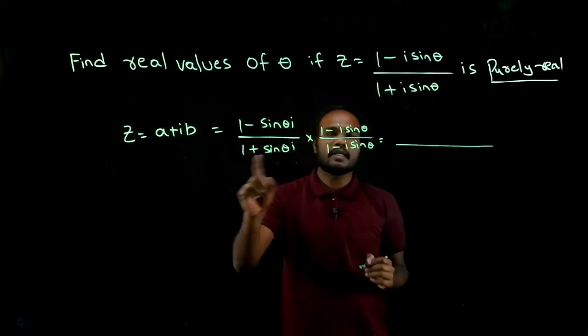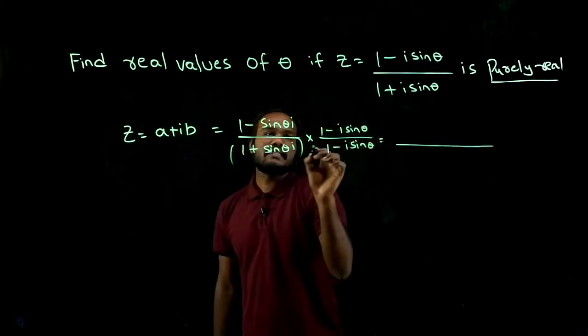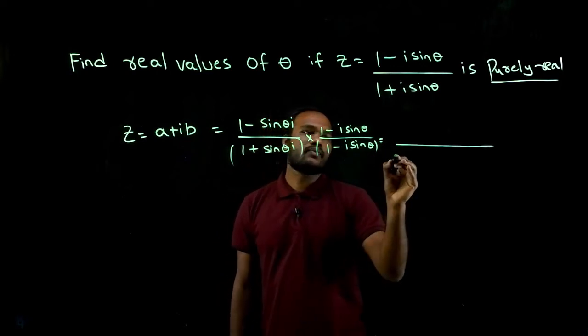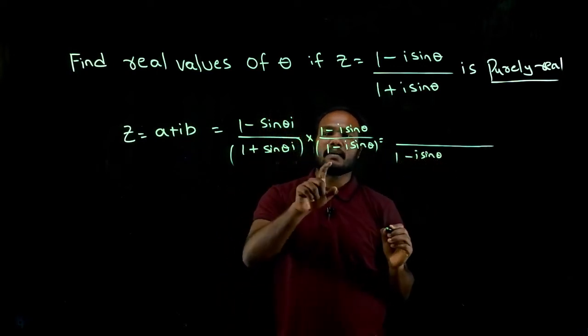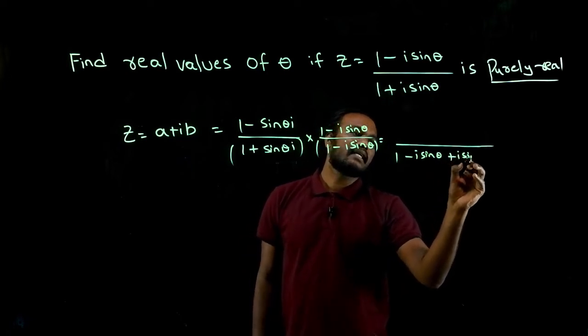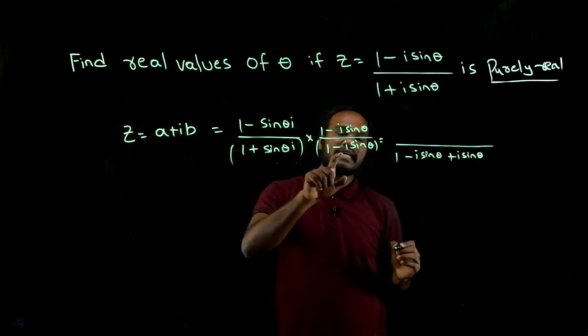What we'll have in the denominator? We have to multiply these two. So one into one is one, minus i sine theta, plus i sine theta, plus into minus is minus.